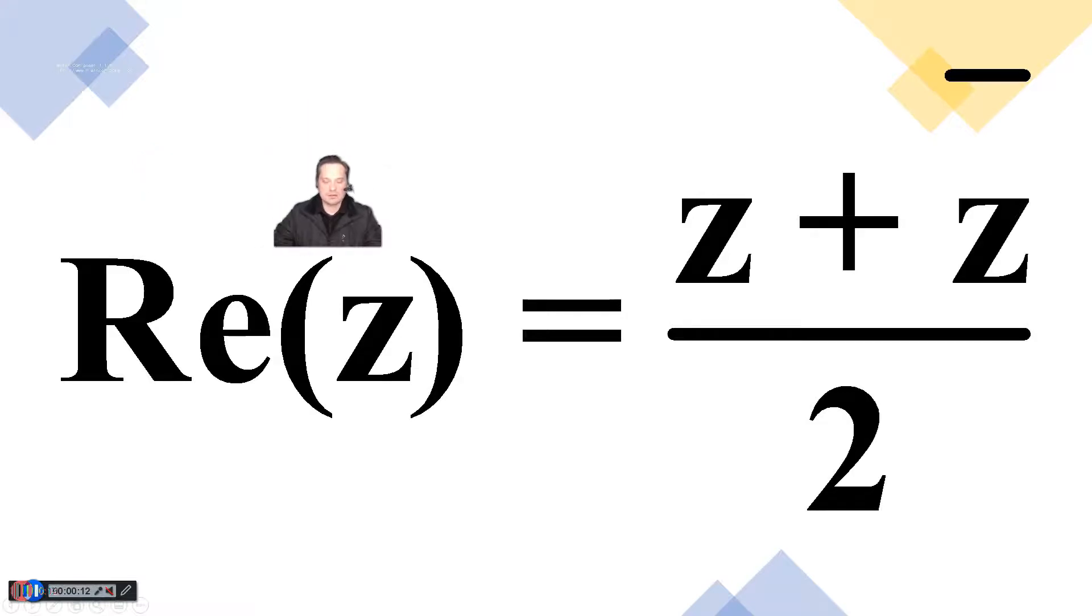Welcome. In this one, let's prove to ourselves that the real part of a complex number z is equal to z plus z bar conjugate divided by 2.